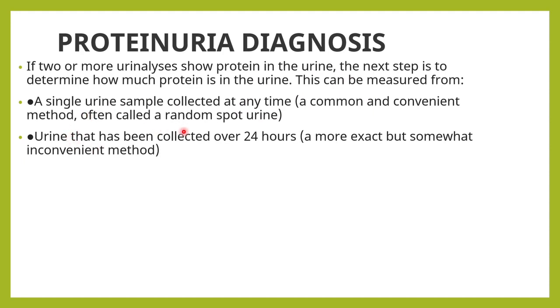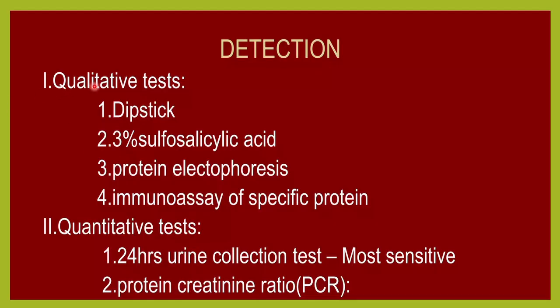The protein-creatinine ratio is an alternative to 24-hour urinary protein. Detection and quantification of proteinuria is very important for patient diagnosis and treatment. These various laboratory methods help us detect proteinuria, quantify how much protein is being excreted, and also identify the type of proteinuria — whether it is glomerular, tubular, or overflow proteinuria — to help with management, treatment, and prognosis.